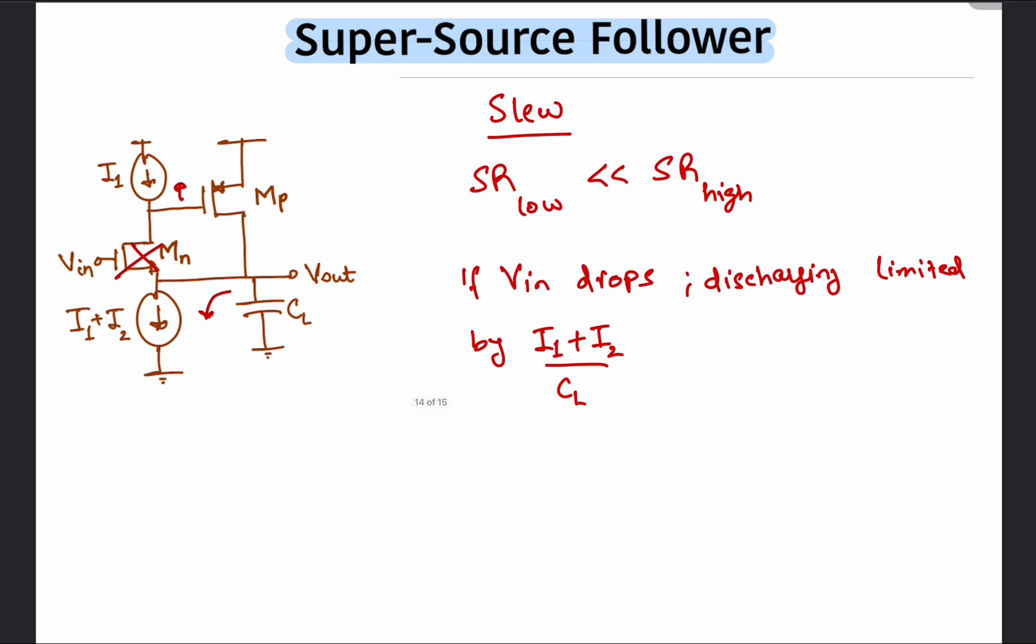However, if Vn is ramped up instantly, then the gate voltage of Mp would drop so as to source the required current to charge the output voltage. A similar analysis also holds true for the simple source follower.